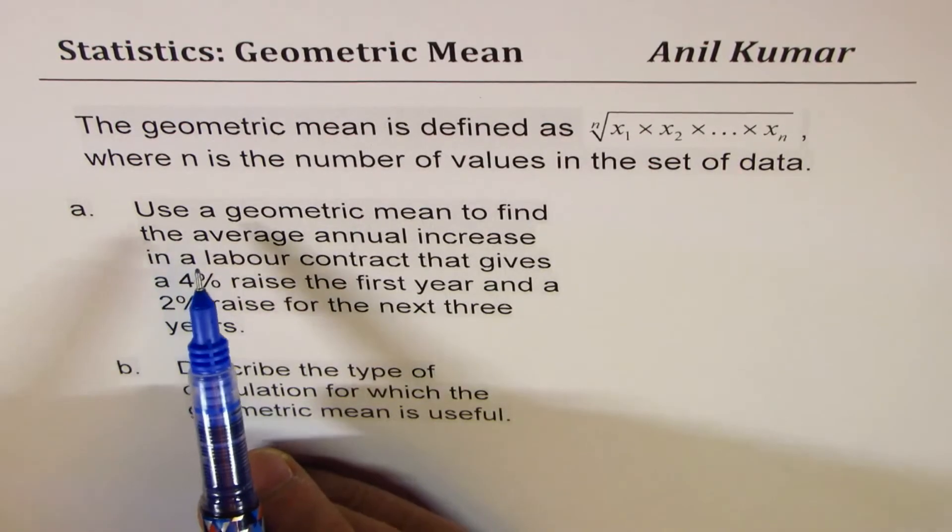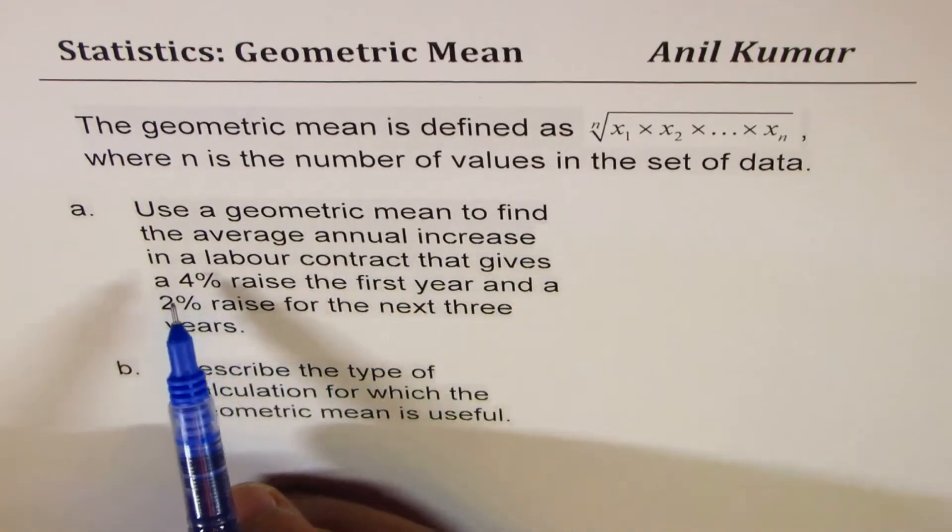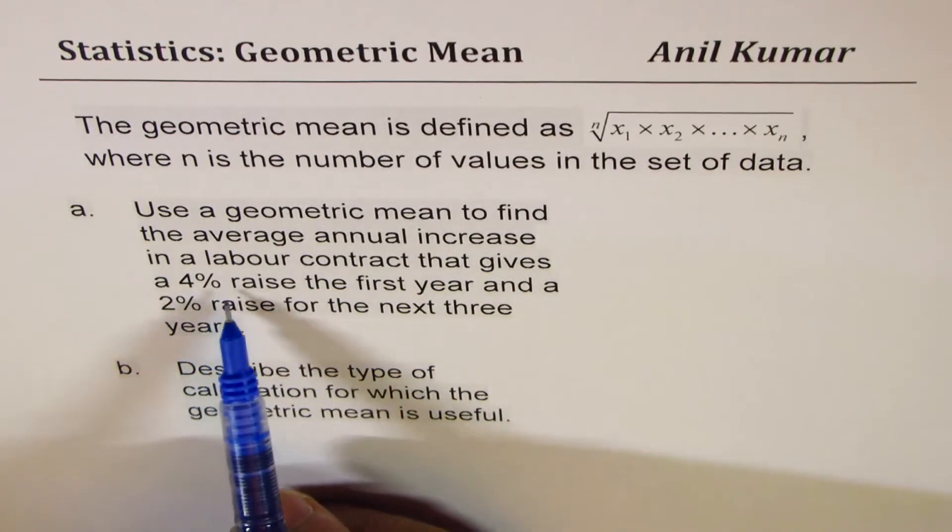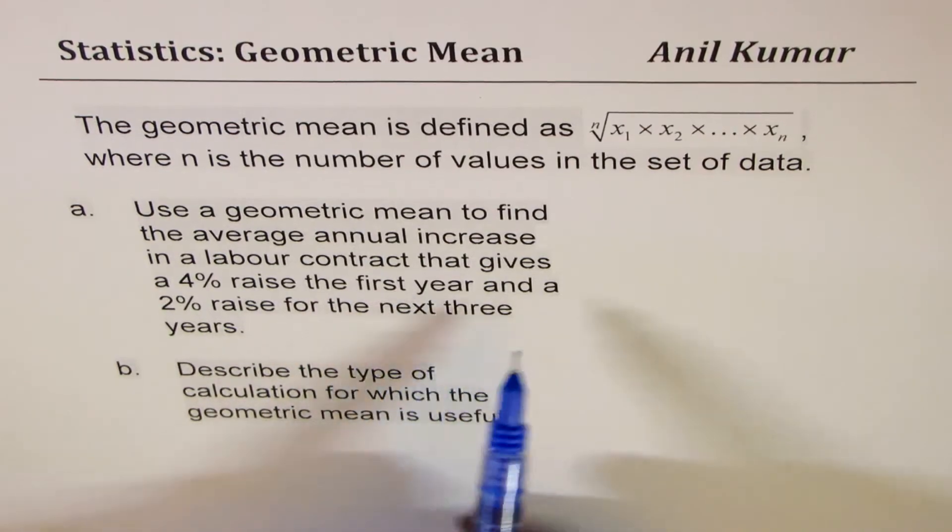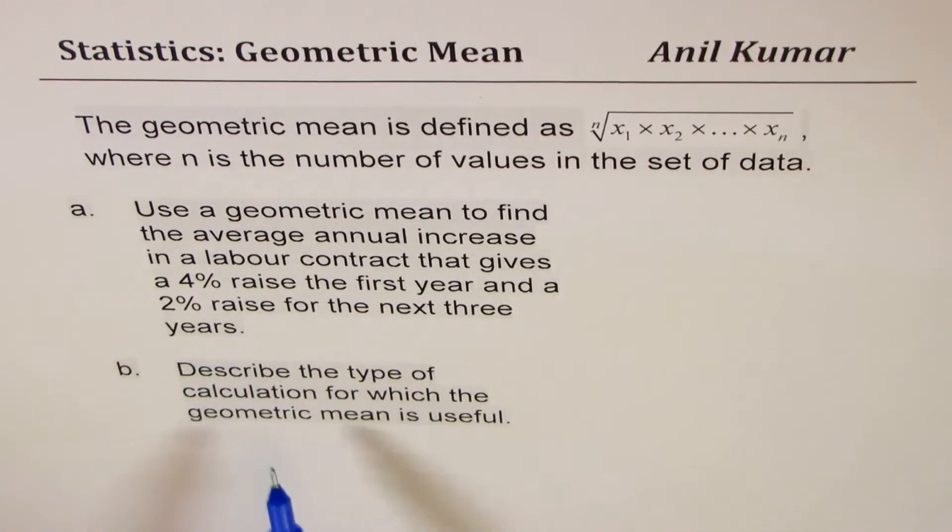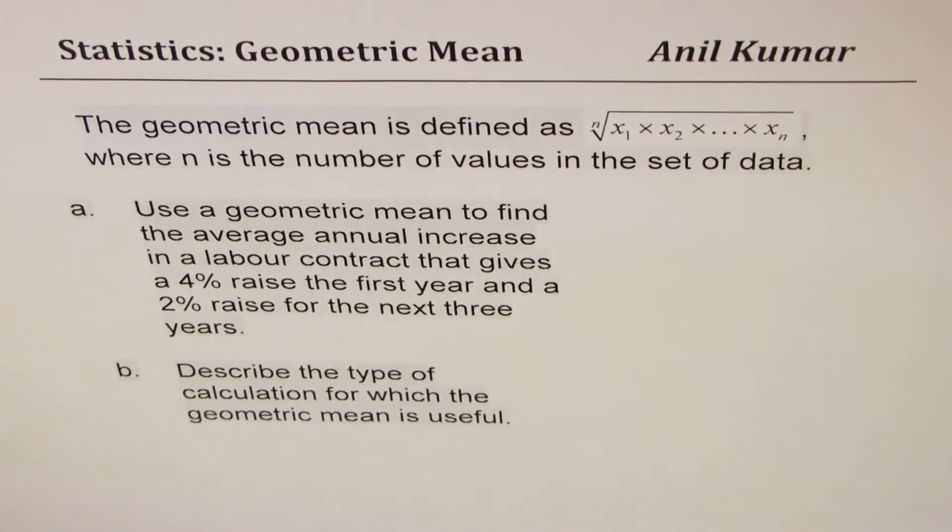The question here is, use a geometric mean to find the average annual increase in a labor contract that gives a 4% raise the first year and a 2% raise for the next 3 years. Describe the type of calculations for which the geometric mean is useful.